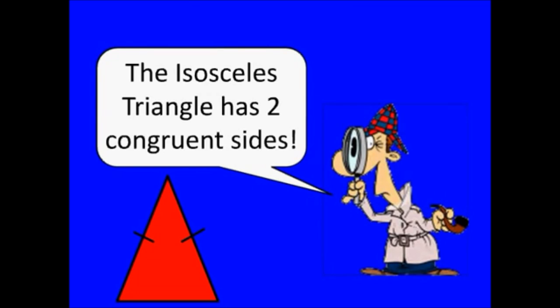Isosceles triangle, triangle, triangle. Isosceles triangle, two congruent sides. The isosceles triangle has two congruent sides.